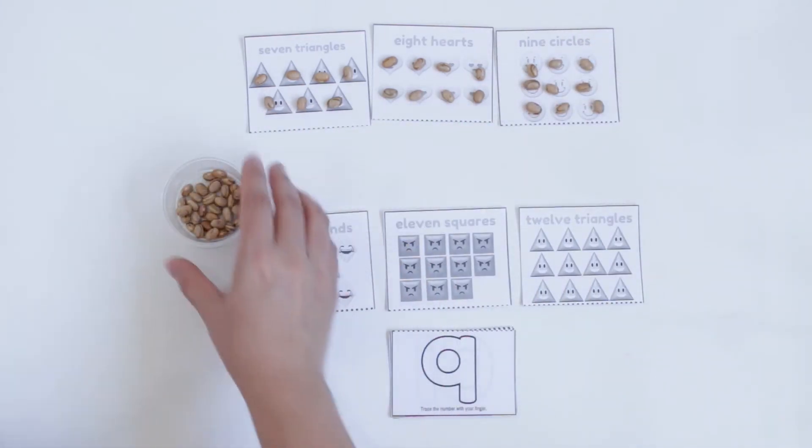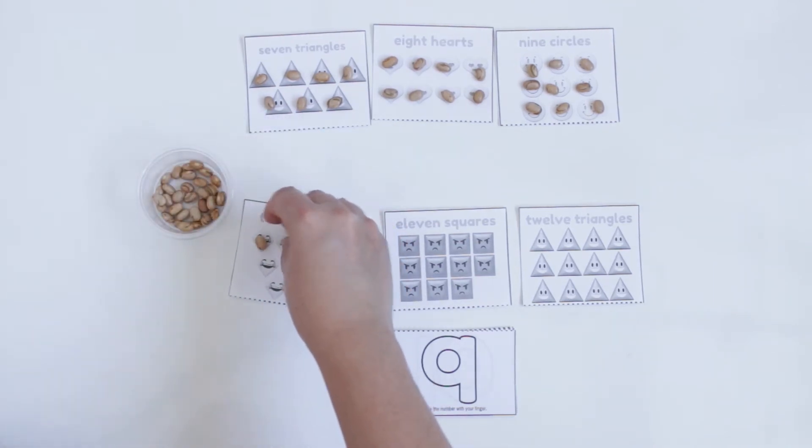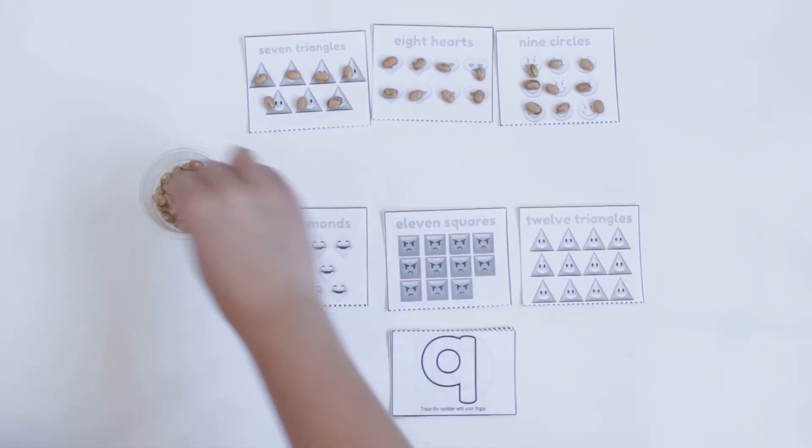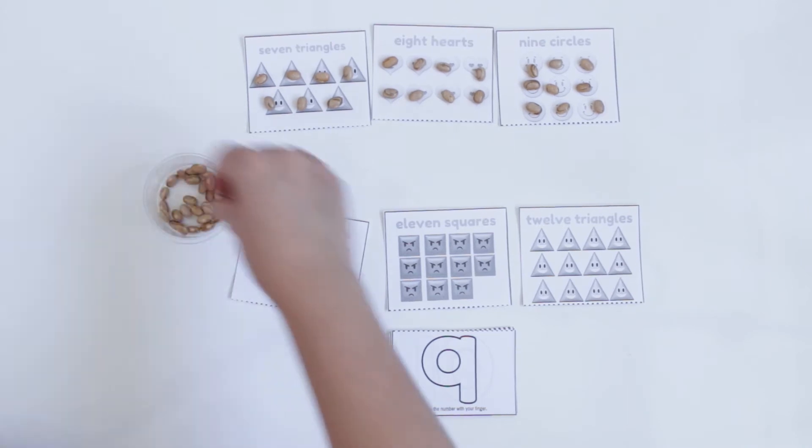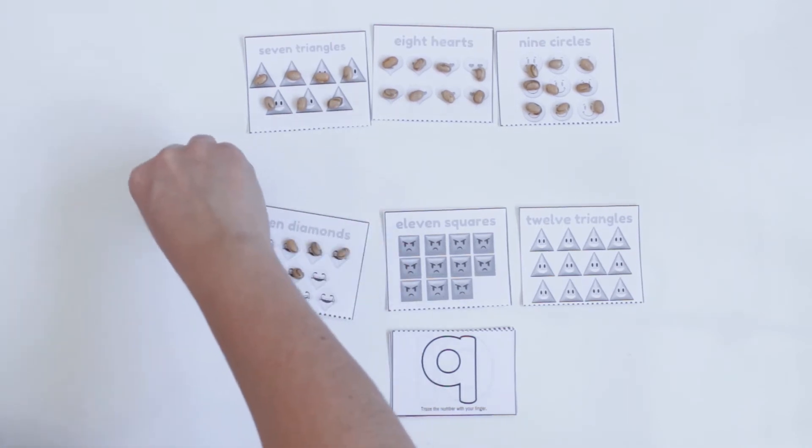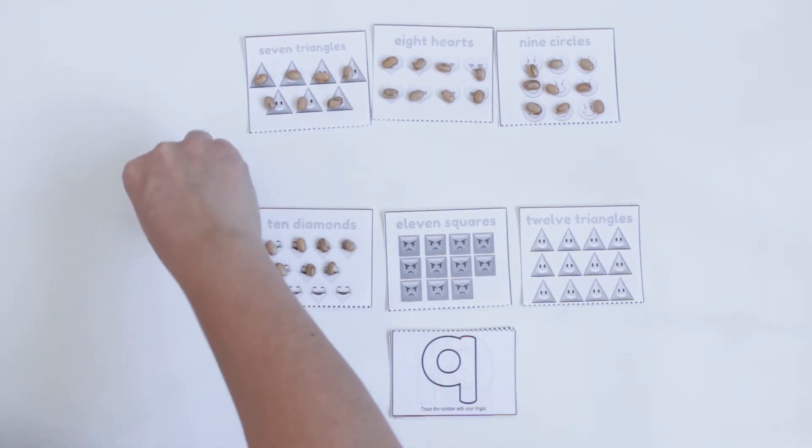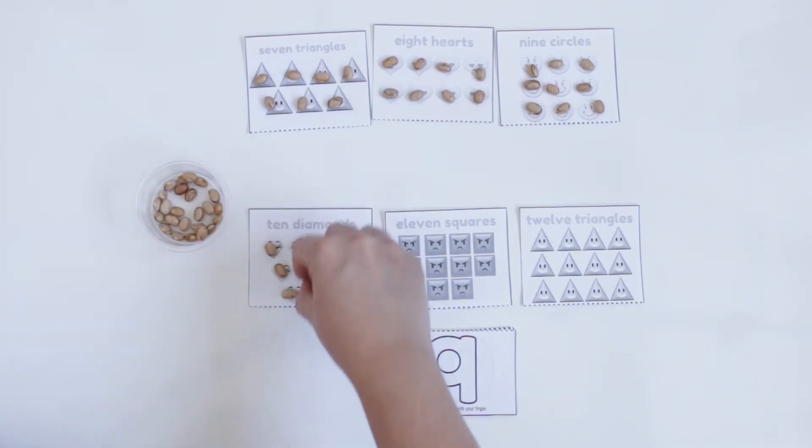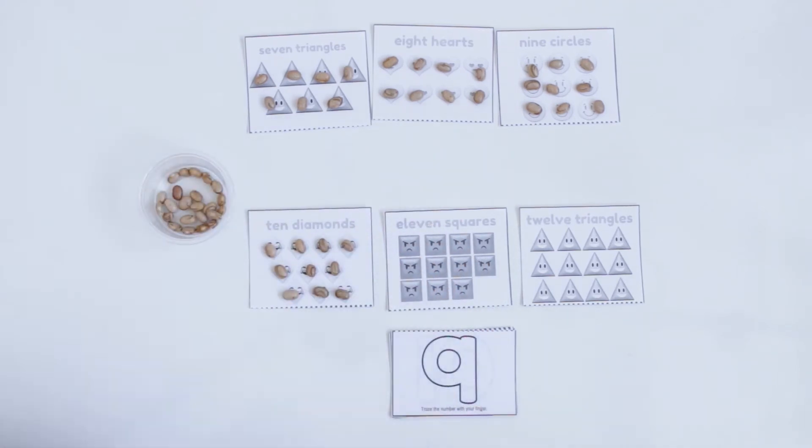And I have diamonds: 1, 2, 3, 4, 5, 6, 7, 8, 9, 10 diamonds.